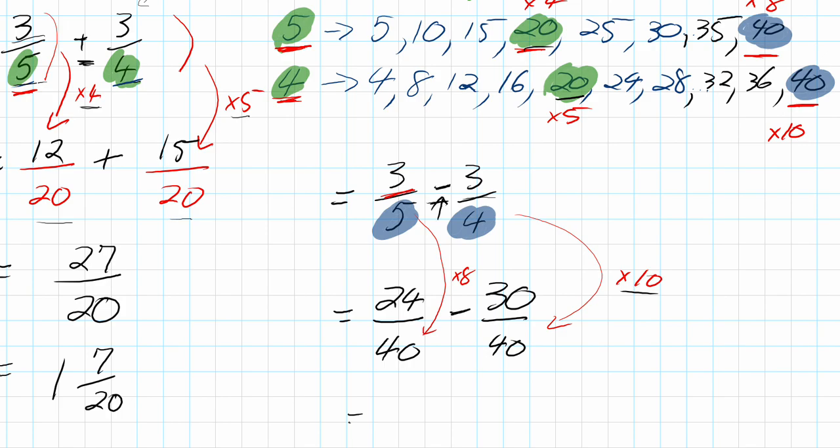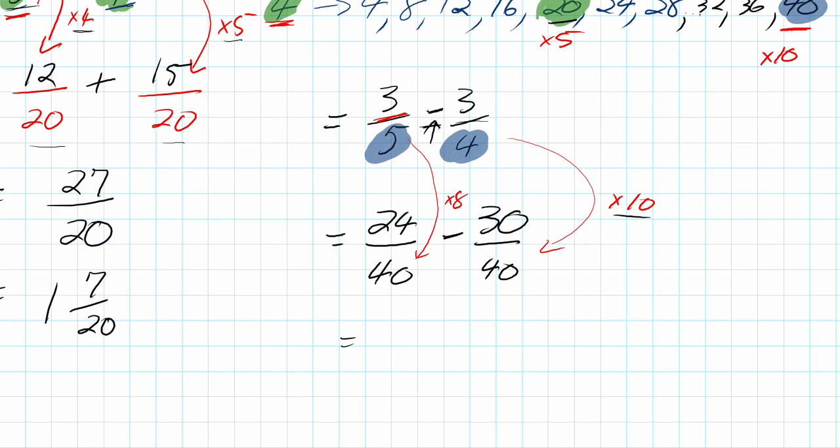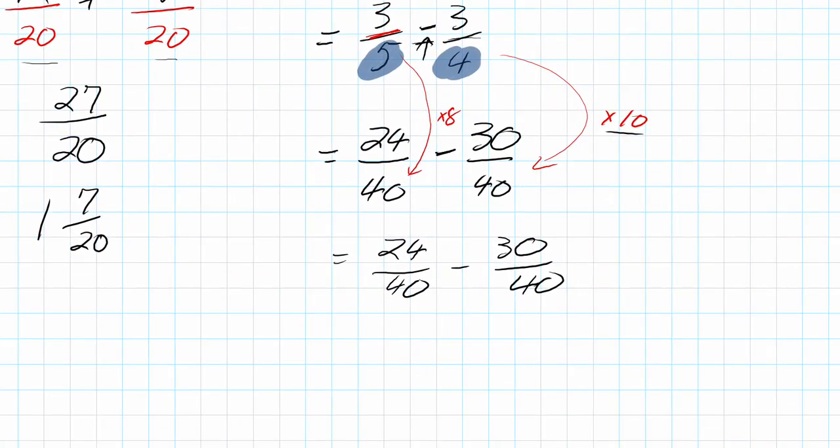I'm going to rewrite this so it's clearer: 24 over 40 minus 30 over 40. Just like our addition, our answer will have the same denominator, which is 40. The only part we change is our numerator: 24 minus 30. This is going to be negative—I end up at negative 6 over 40.